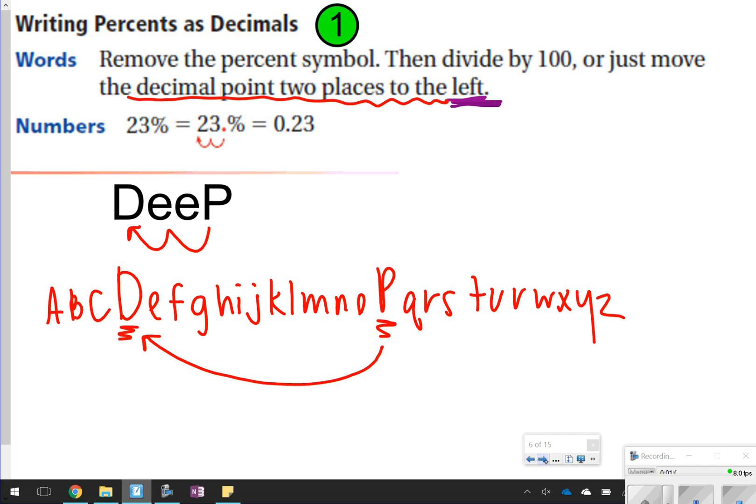Another way you can remember it as well is the alphabet. The letter D comes first and then the letter P comes next. Again, percents to decimals, you have to go back to the left to get back to DeeP. So let's try a few questions. Oh sorry, make sure you pause this and write this down first before we go on. Thanks!